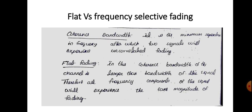Next, we will see flat and frequency selective fading. Before that, we need to see coherence bandwidth. Flat and frequency selective fading are defined based on coherence bandwidth. Coherence bandwidth is the minimum separation in frequency after which two signals will experience uncorrelated fading. It is the minimum separation required between transmitted signals through the channel such that they experience uncorrelated fading.